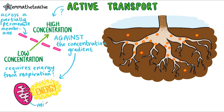It's a mitochondrion. Well done if you remembered that. Before we move on to the definition, we'll look at an example, as it will help us understand the process of active transport in terms of the keywords dilute and concentrated.